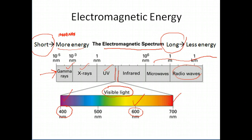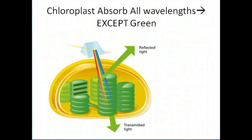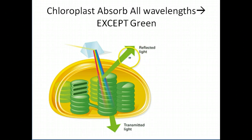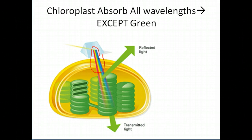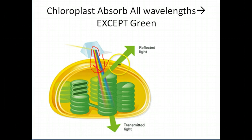We talked about in class how plants are green — hopefully no wild discovery — but we can tell you the reason why. If you take the visible spectrum, the chloroplasts of a plant cell will be struck by all those wavelengths of light coming from the sun. There's no filter there. All of those wavelengths, with the exception of the green wavelength, are absorbed by the chloroplasts.